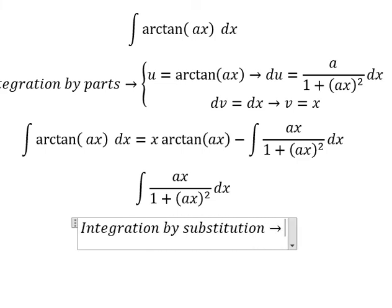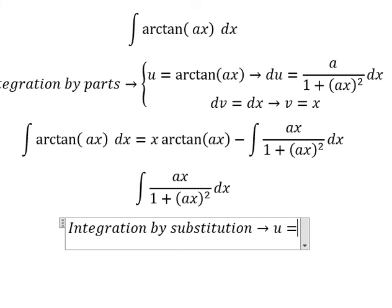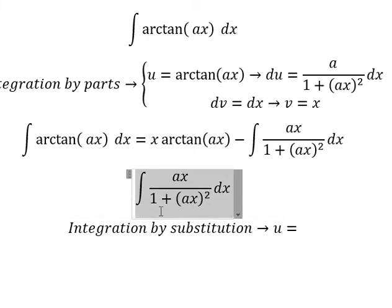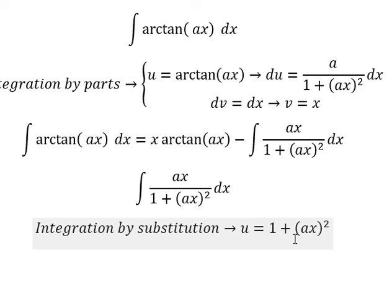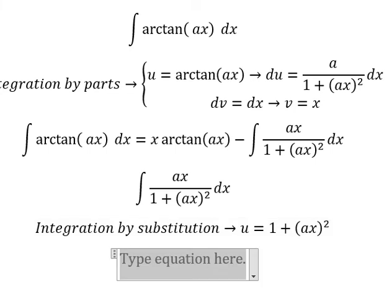So I will put u equals to this one. So if we do first derivative for both sides, you got du equals 2a squared x dx.